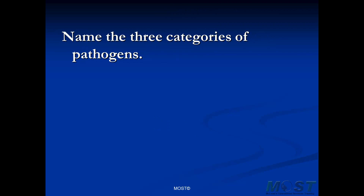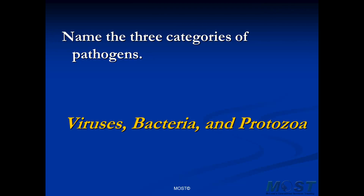Name the three categories of pathogens. They are viruses, bacteria, and protozoa. These don't have to be necessarily pathogens — these could be the three categories of microorganisms generally — but it certainly applies to pathogenic microorganisms.